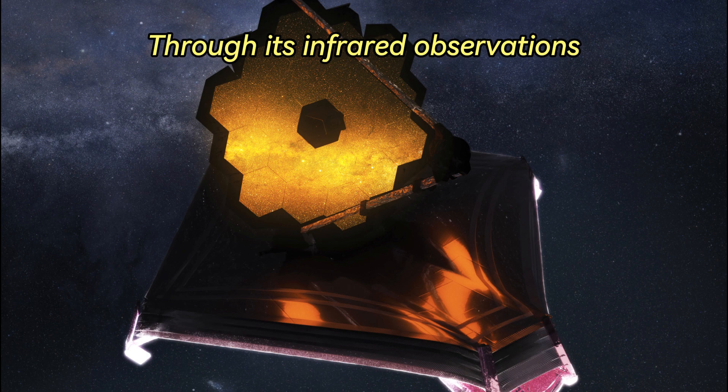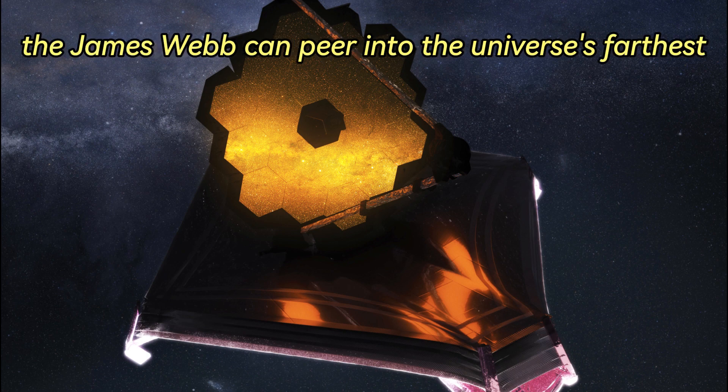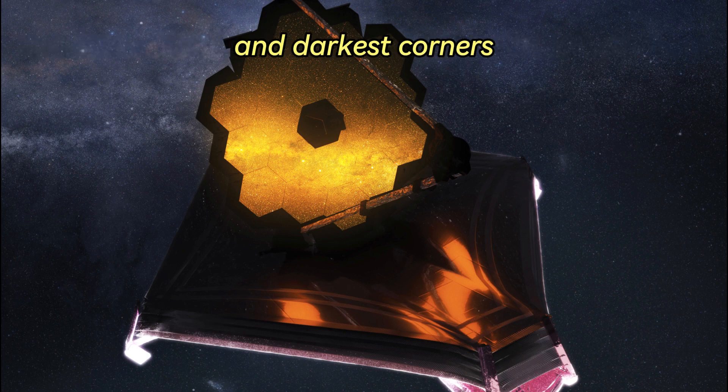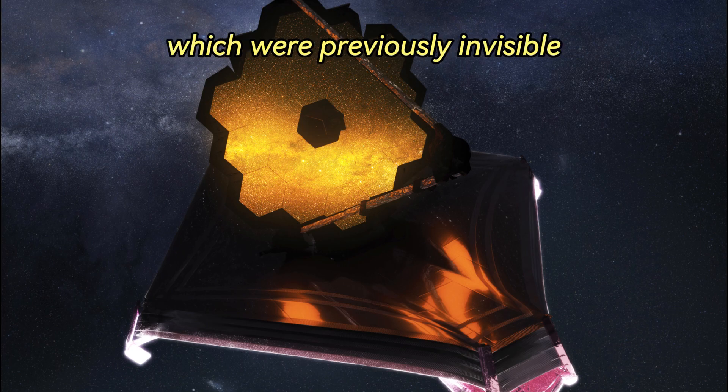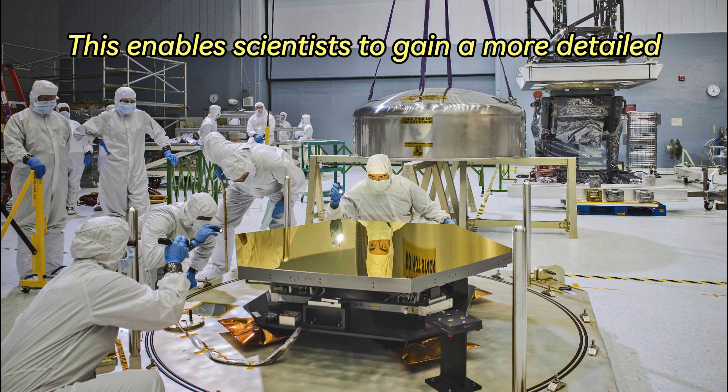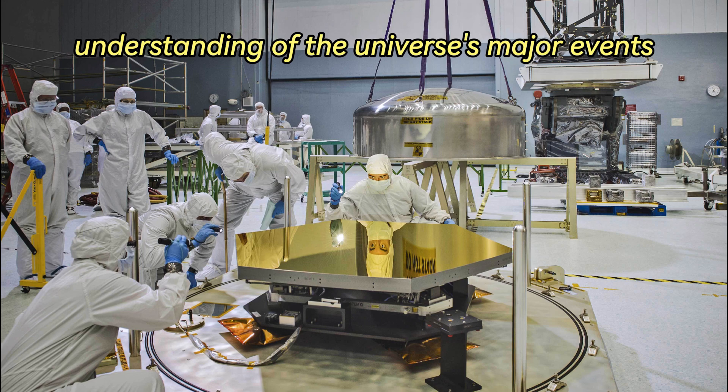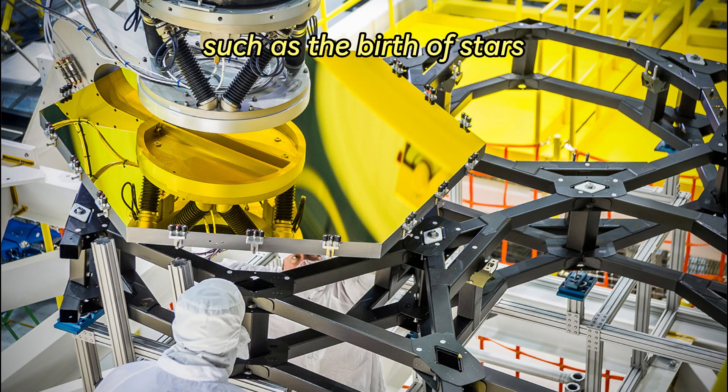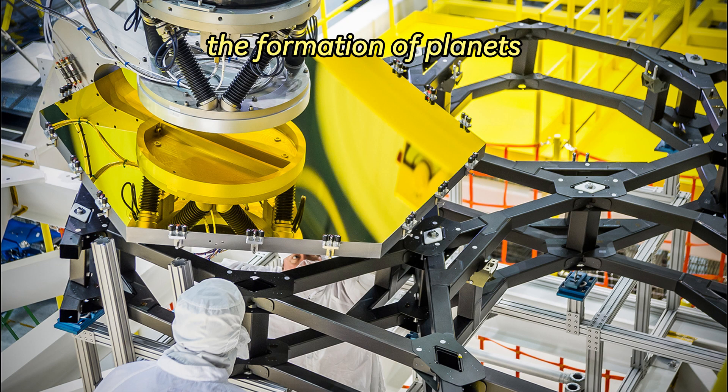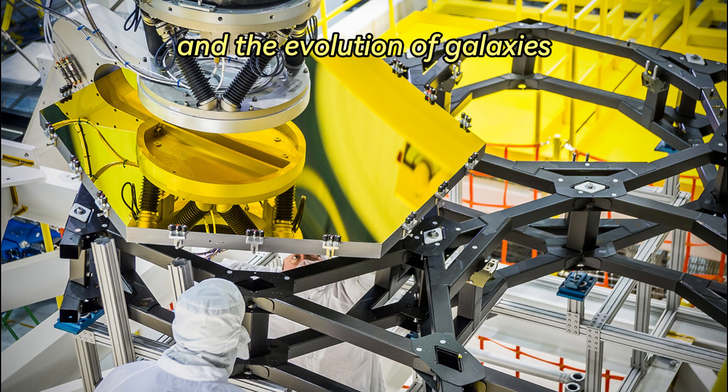Through its infrared observations, the James Webb can peer into the universe's farthest and darkest corners, which were previously invisible. This enables scientists to gain a more detailed understanding of the universe's major events, such as the birth of stars, the formation of planets, and the evolution of galaxies.